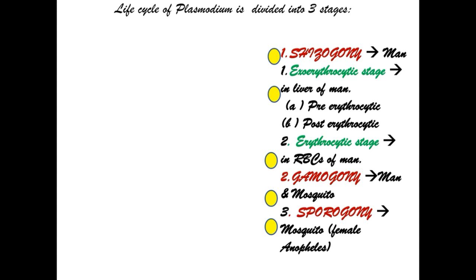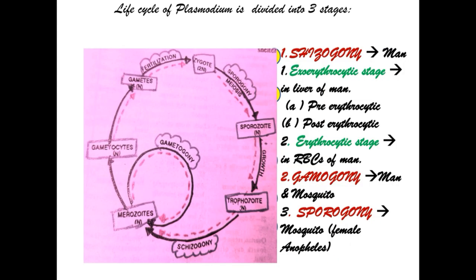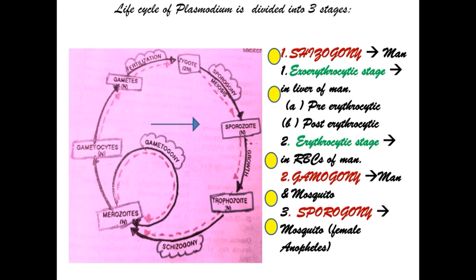There are two phases in the exoerythrocytic stage: pre-erythrocytic schizogony and post-erythrocytic schizogony. The infective stage is the sporozoite. In humans, schizogony takes place; next gametogony takes place, starting in humans and completing in the mosquito. In the mosquito, the last stage, sporogony, takes place.